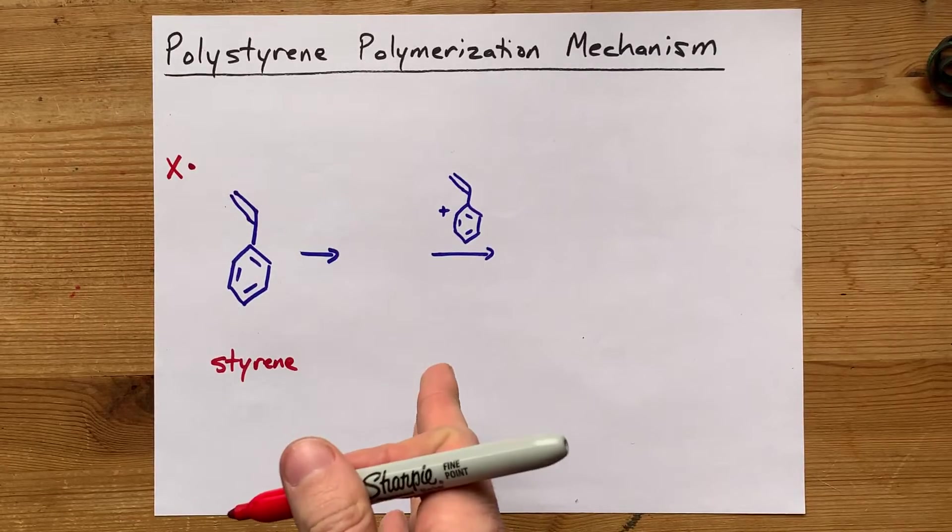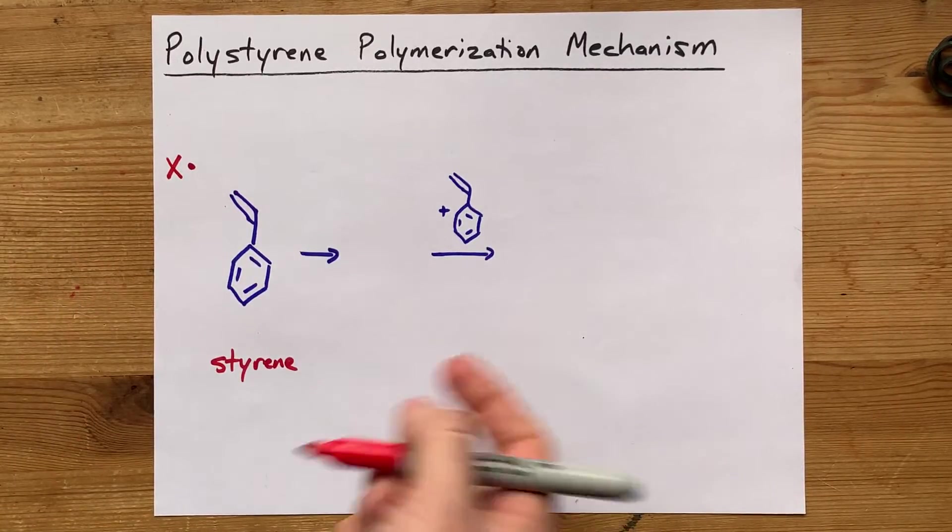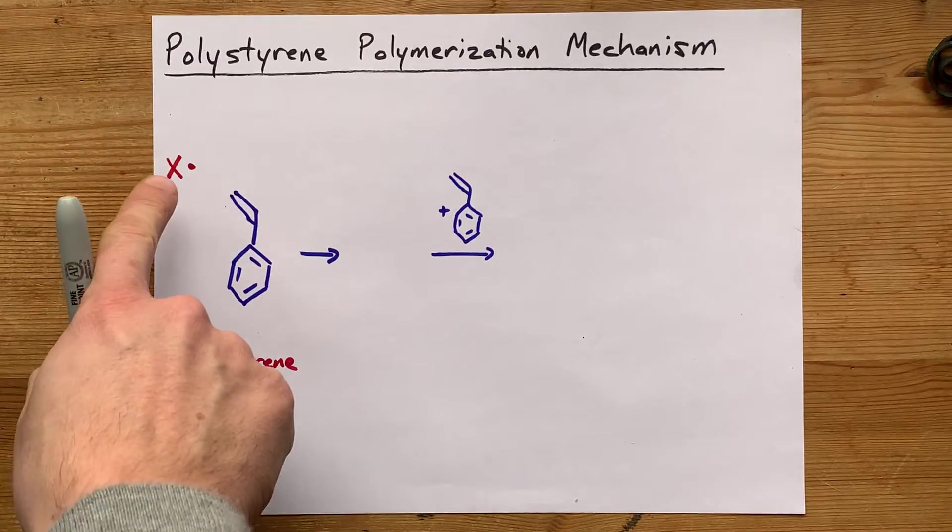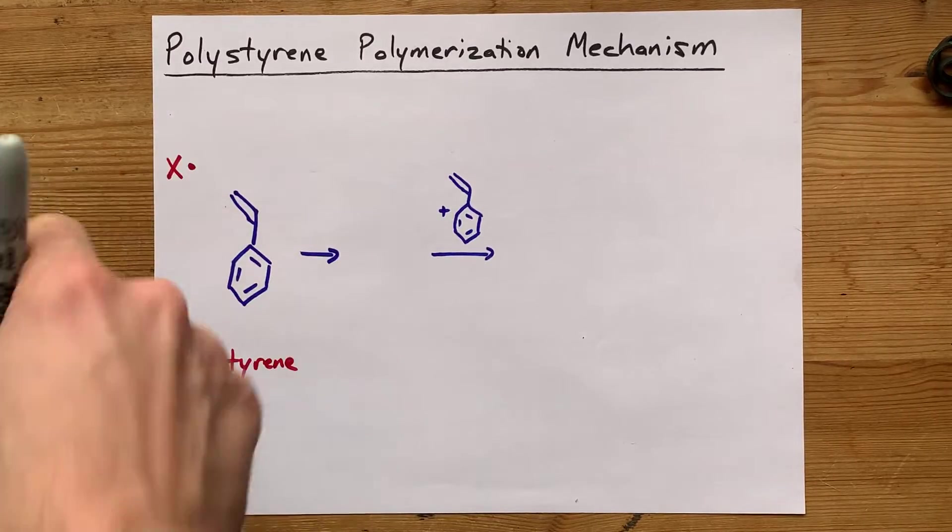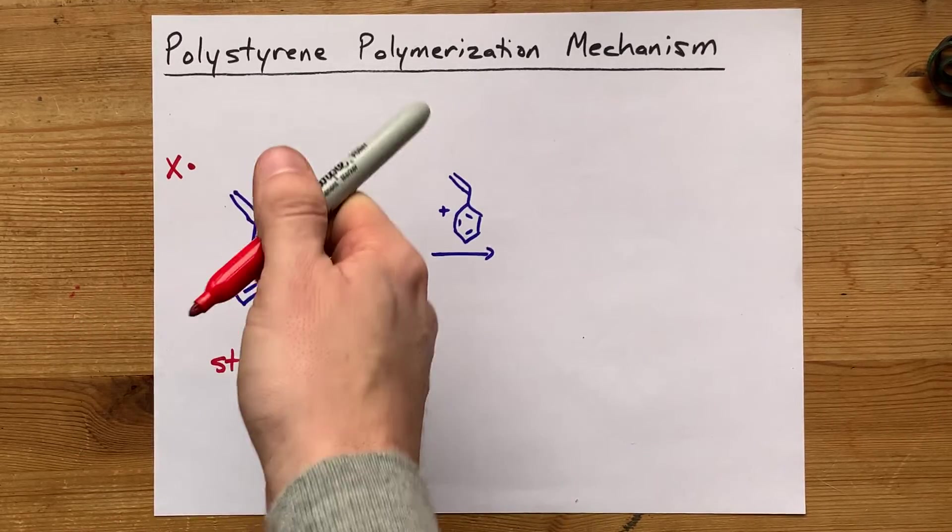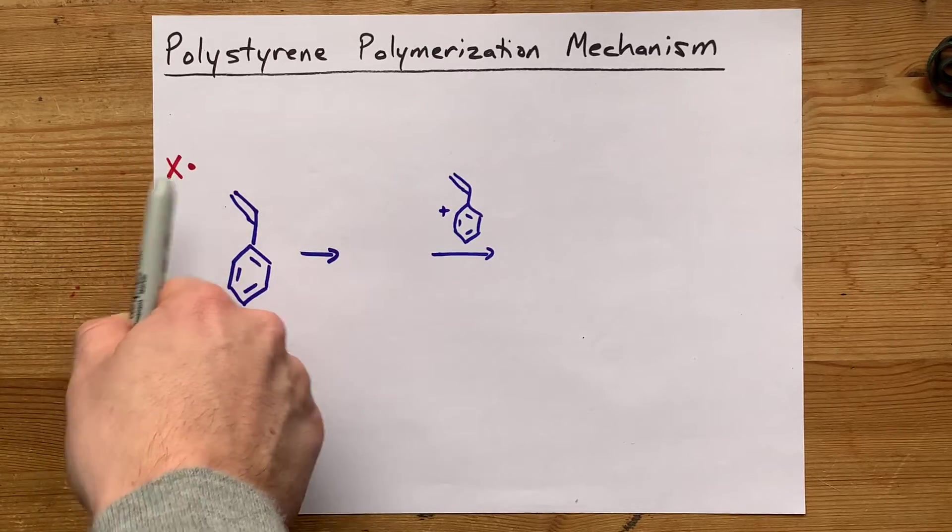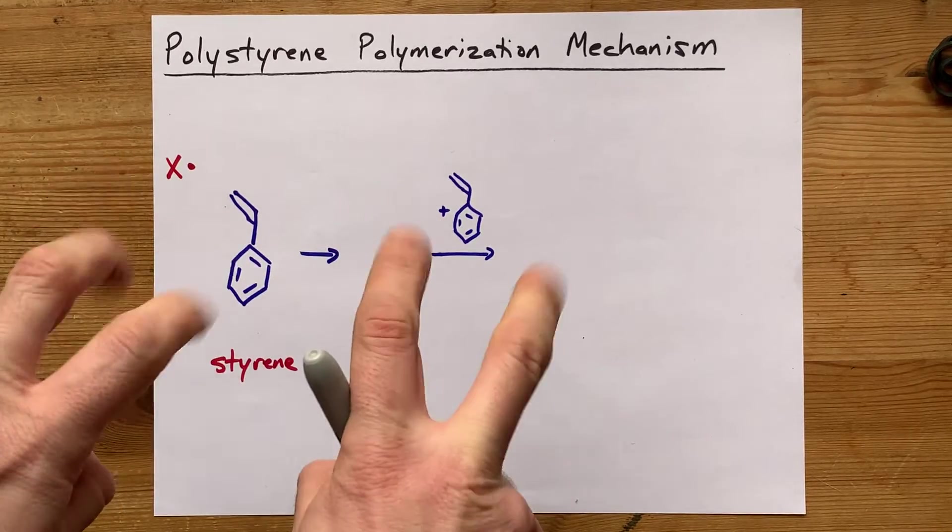When I was reading about this, apparently we use benzoyl peroxide in the real world, but your teacher might use Br or Cl, basically anything that has an unpaired electron. The first step of this polymerization is actually breaking a molecule apart to create these free radicals. That's called initiation.